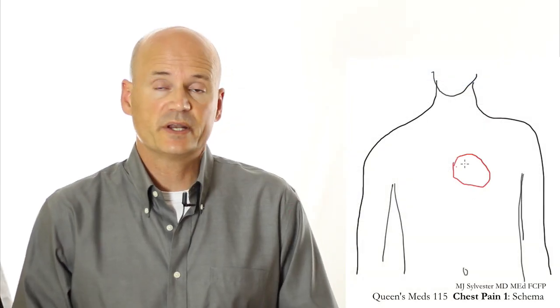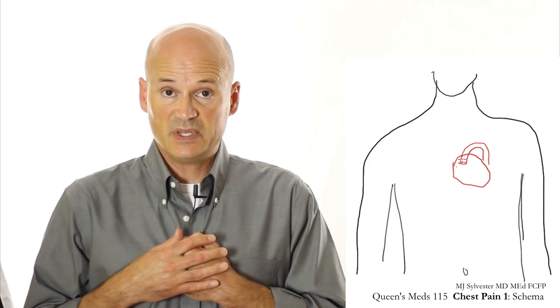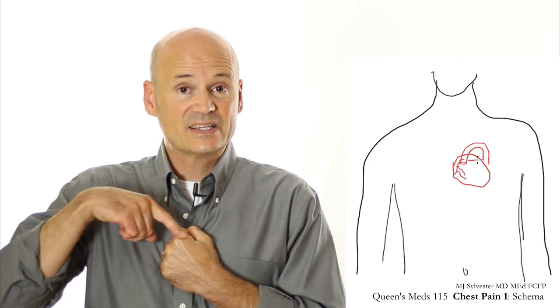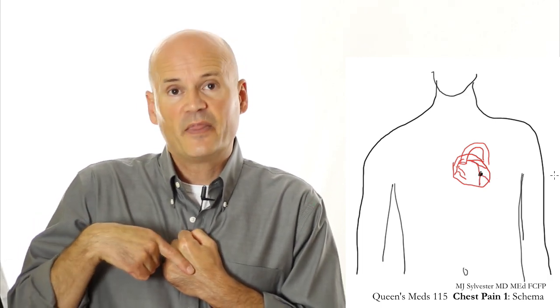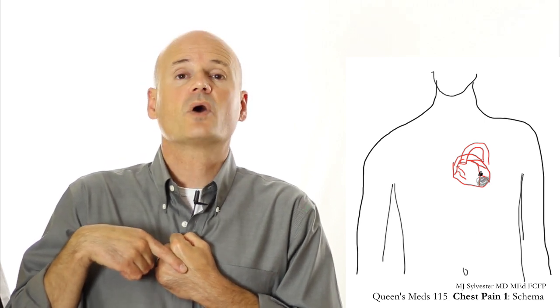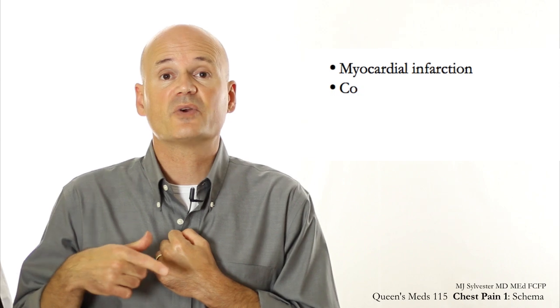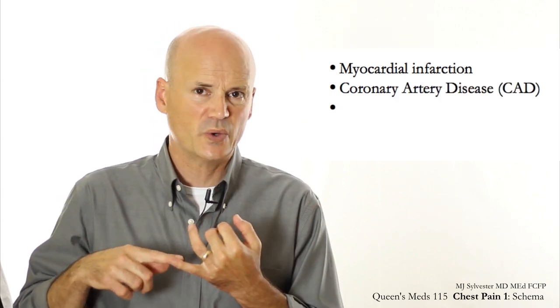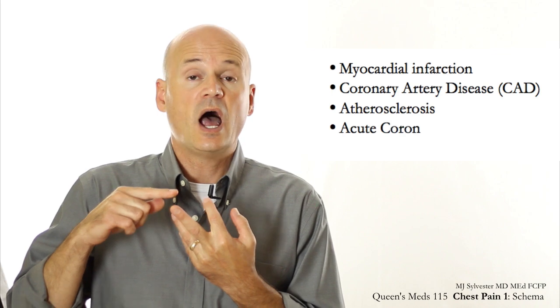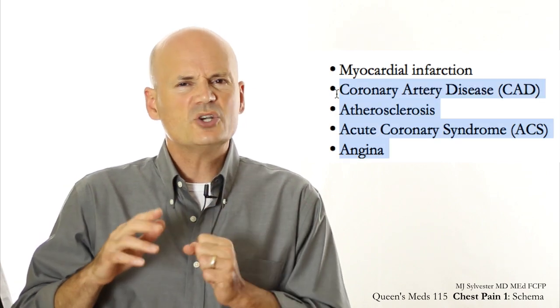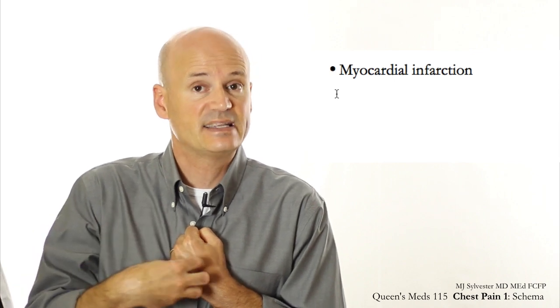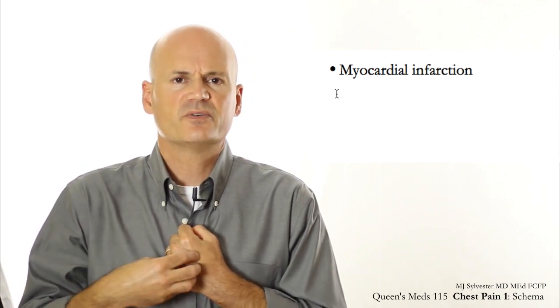The first and deepest level has to do with the heart. I want you to visualize the heart and its coronary arteries feeding it oxygenated blood. If those coronary arteries get plugged, then your heart muscle can die — we call that myocardial infarction. You'll hear other expressions like coronary artery disease, atherosclerosis, acute coronary syndrome, or angina, but to make it simple, we're just going to talk about myocardial infarction — when one of those vessels gets plugged, leading to death of cardiac muscle. That's level one, and it's the first of three killers we'll discuss.